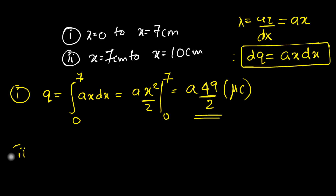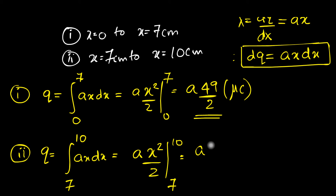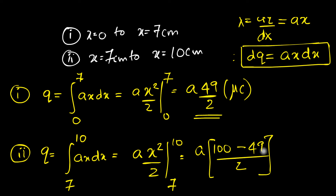Similarly, for the second segment from 7 to 10 cm: Q = ∫₇¹⁰ a·x dx = a · [x²/2] from 7 to 10. Substituting the limits: (100/2) − (49/2) = 51/2. So the charge in the last 3 centimeters is a × 51/2 microcoulombs.